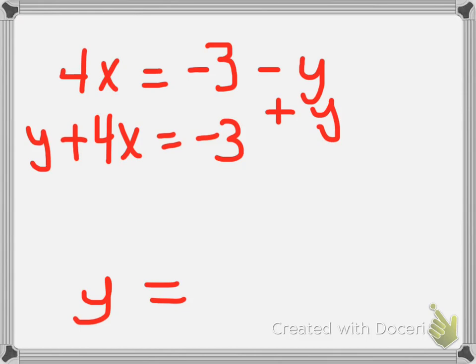Now when I add y to the right side, it zeroes it out. And now my equation has a y on the left side because I have to do the same operation to both sides of the equation. So now I have y plus 4x equal negative 3.